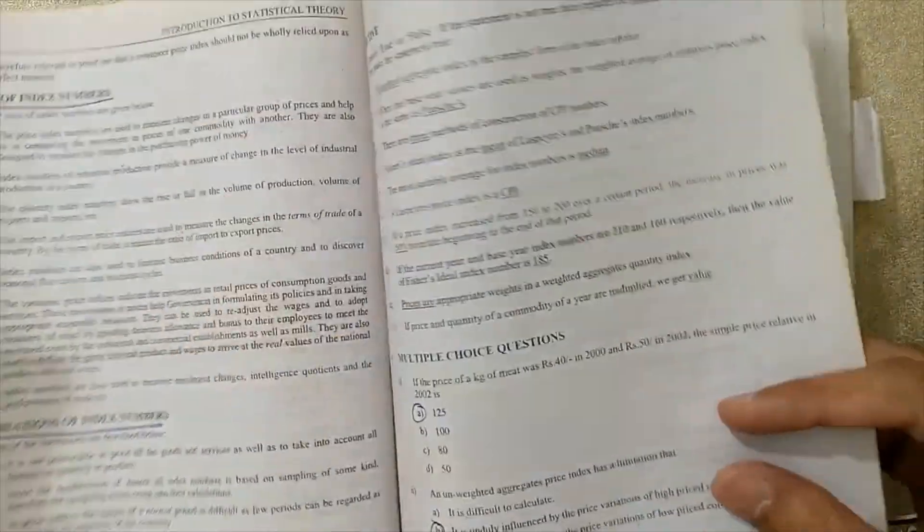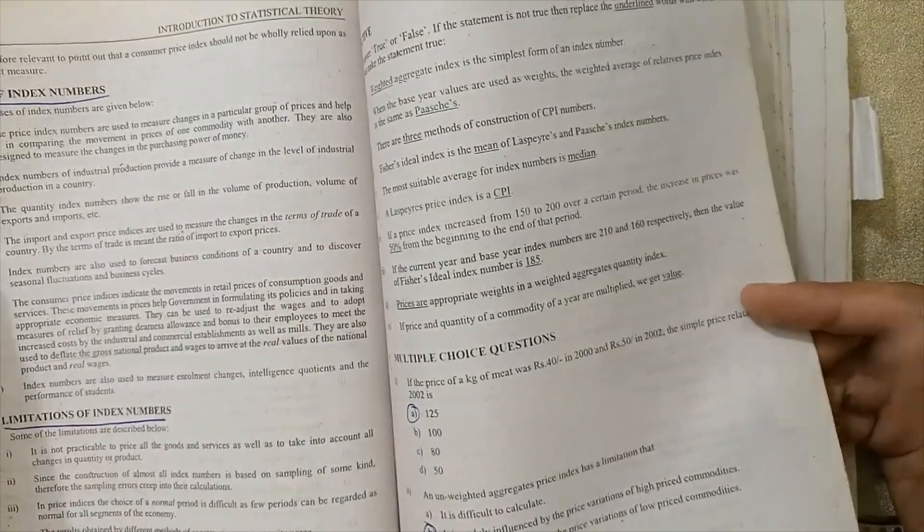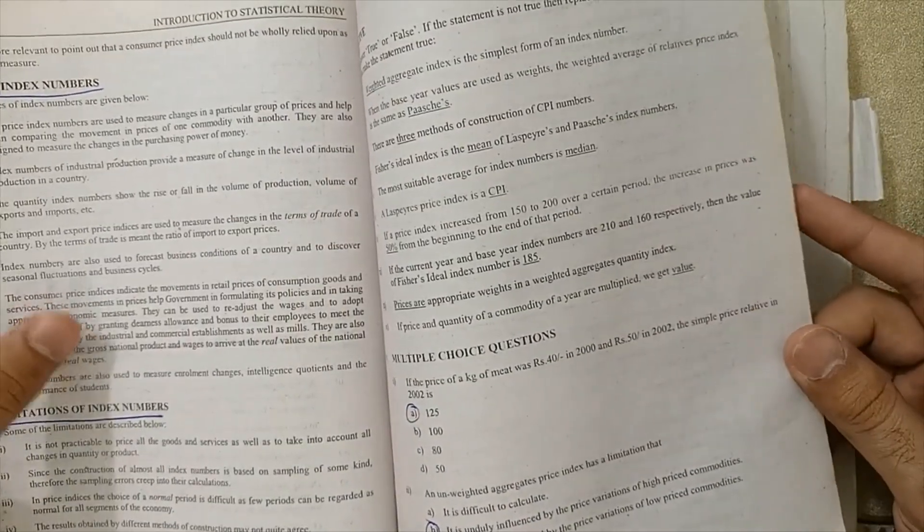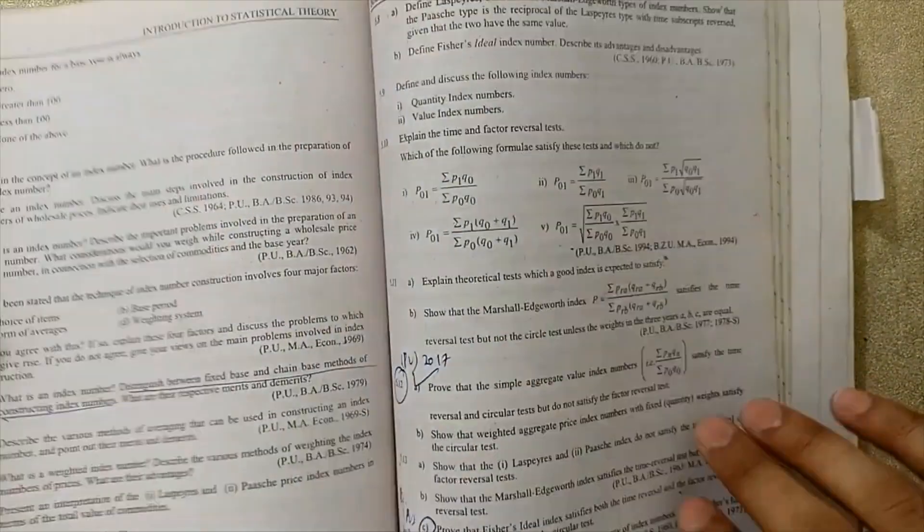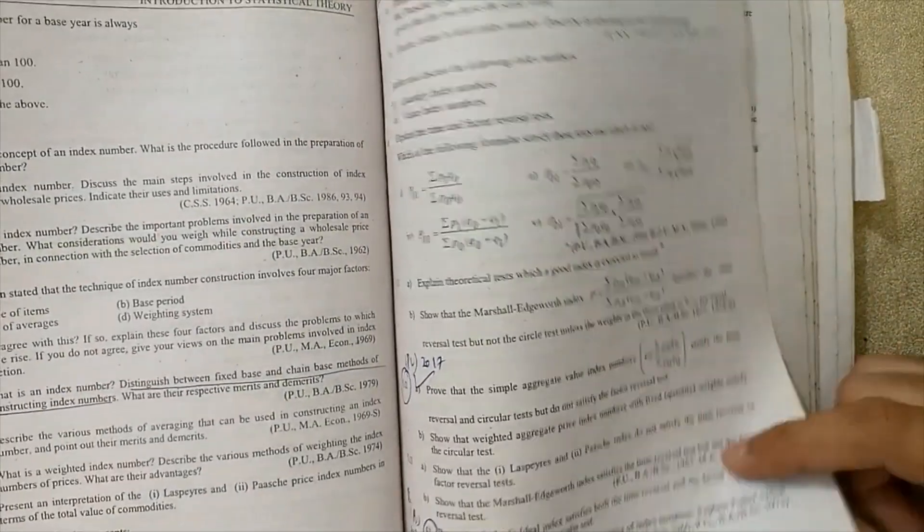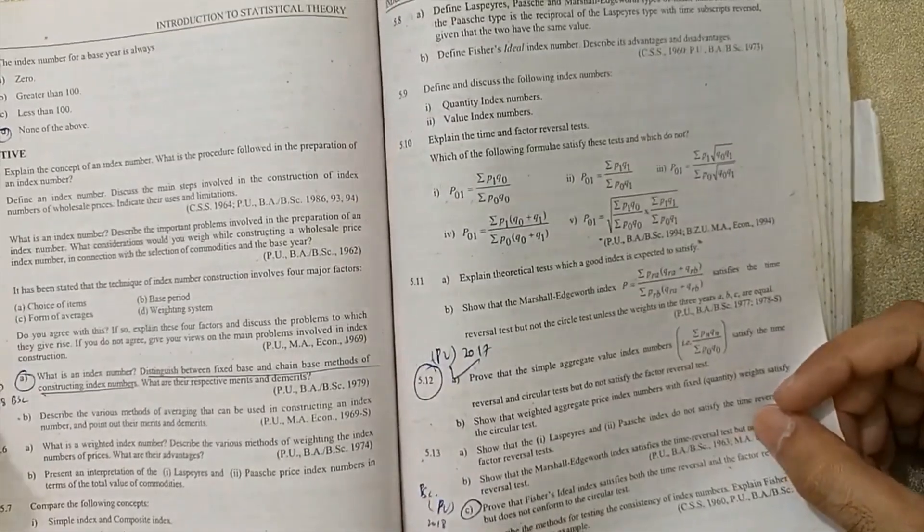Next step is here: uses of index numbers, just remember the one to two points, and limits of index number is very important, just remember one, two, three points. And next, I'm at the Exercise 5.5, topic is very important.